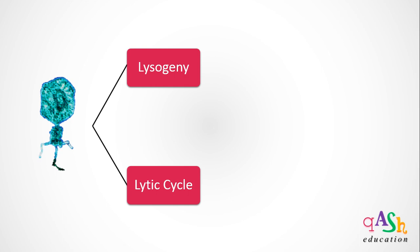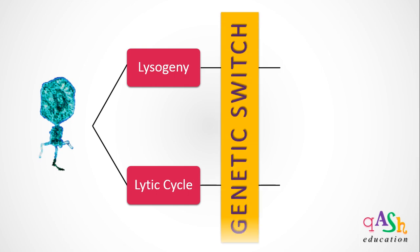The choice between lysogeny and lytic cycle by the lambda phage is catalyzed by a complex genetic switch. This indicates that the genes coding for proteins required for lysogeny will be on when the phage opts for lysogeny, whereas those for the lytic cycle will be switched off. Similarly, the genes coding for proteins required for the lytic cycle will be on when the phage opts for the lytic cycle, whereas the genes coding for lysogeny will be turned off.